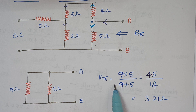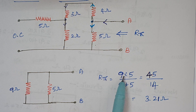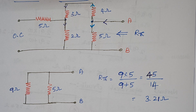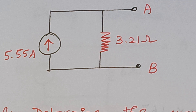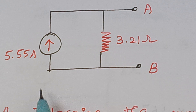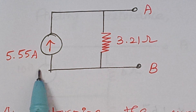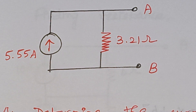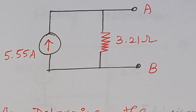To calculate R-Thevenin, we just do a parallel combination of resistors: R1 into R2 divided by R1 plus R2, which gives the answer of 3.21 ohms. Now we will draw the final Norton's equivalent circuit. This is our final Norton's equivalent circuit — we have a short circuit current and a Thevenin's resistance in parallel with this short circuit current. So here comes the end of this problem; we will proceed with the next one.